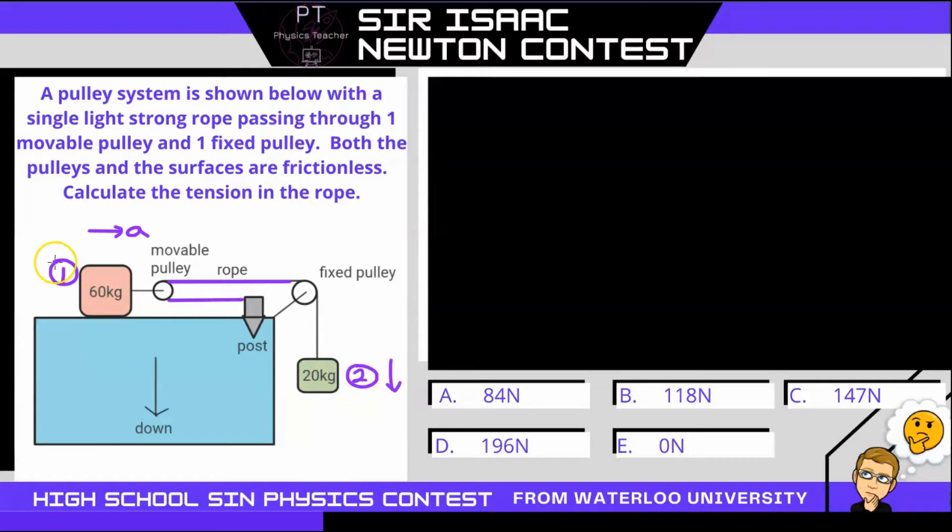So block two, if block one has an acceleration A, block two has an acceleration 2A. Now that we know that, we can go and solve the rest of the problem.